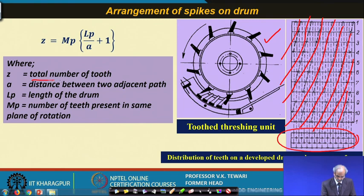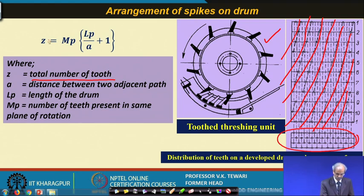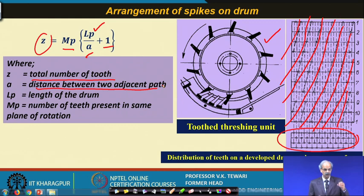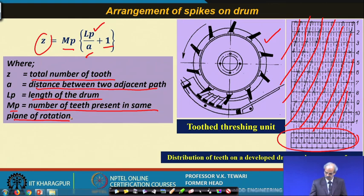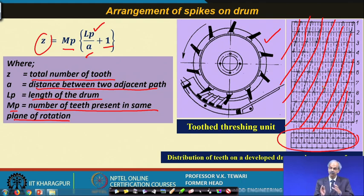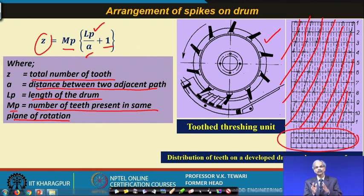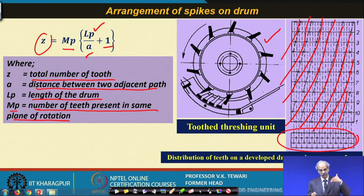The total number of teeth Z is given as: Z = MP · (LP / A + 1), where A is the distance between two adjacent paths, LP is the length of the drum, and MP is the number of teeth in the same plane of rotation. Understanding the total number and correct arrangement of teeth is essential — otherwise threshing will not take place properly, and the teeth must be designed correctly on the periphery of the drum.